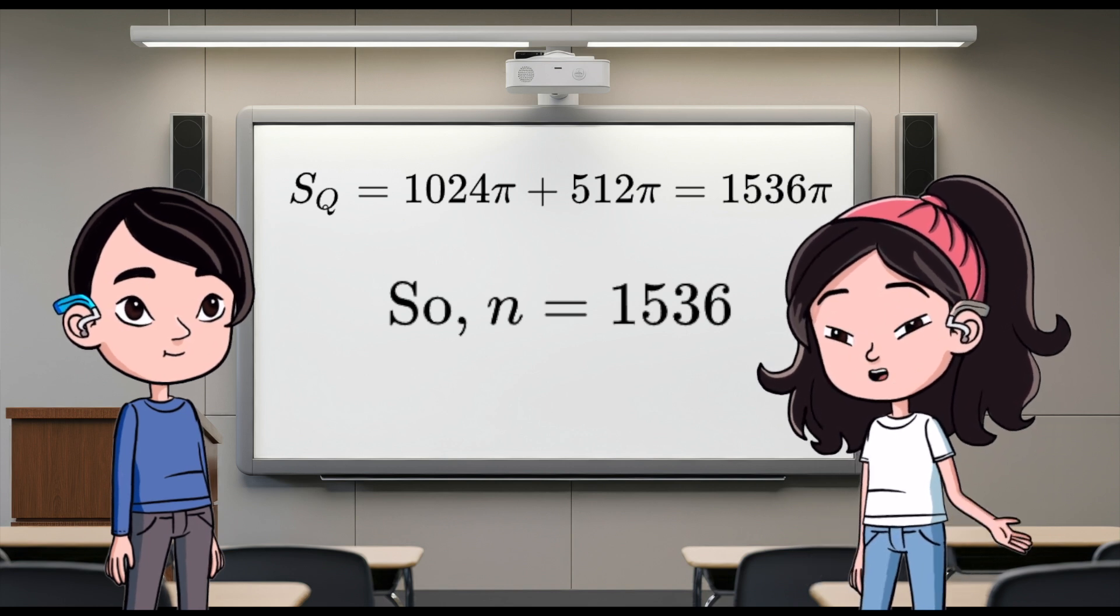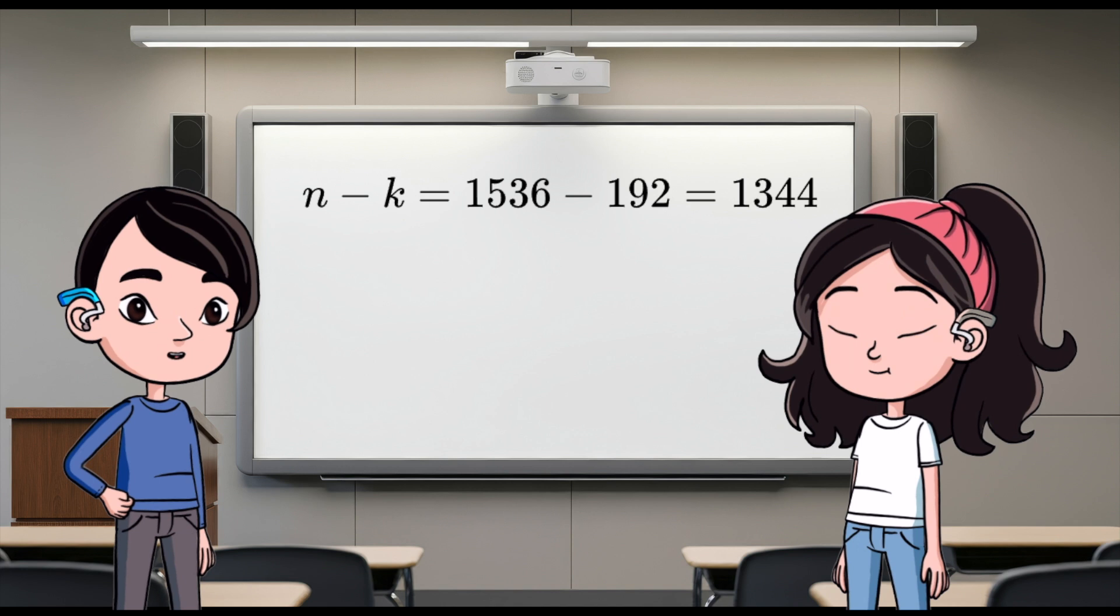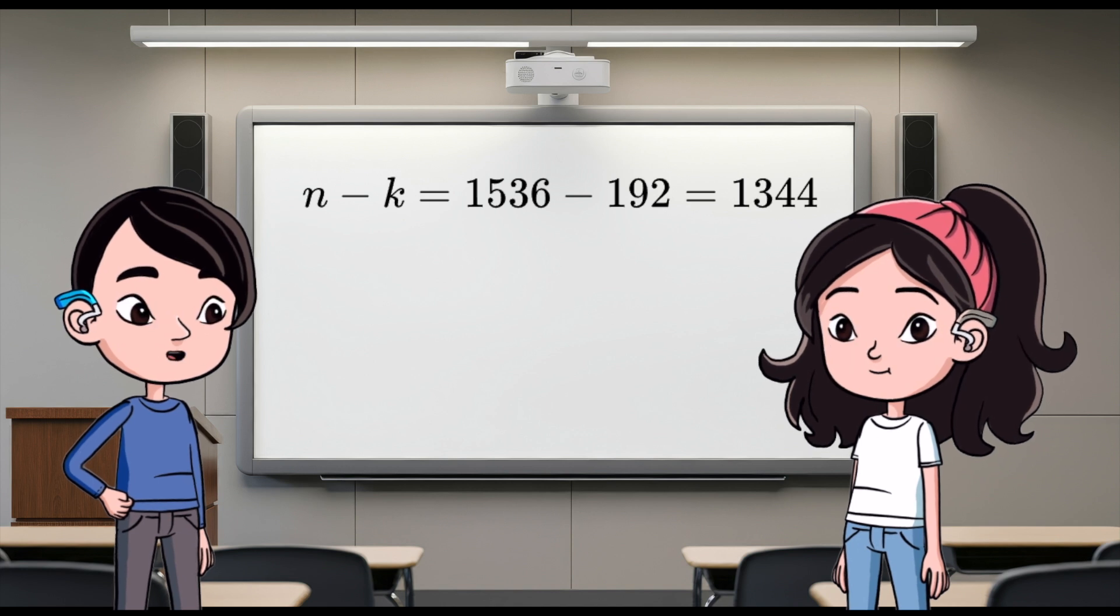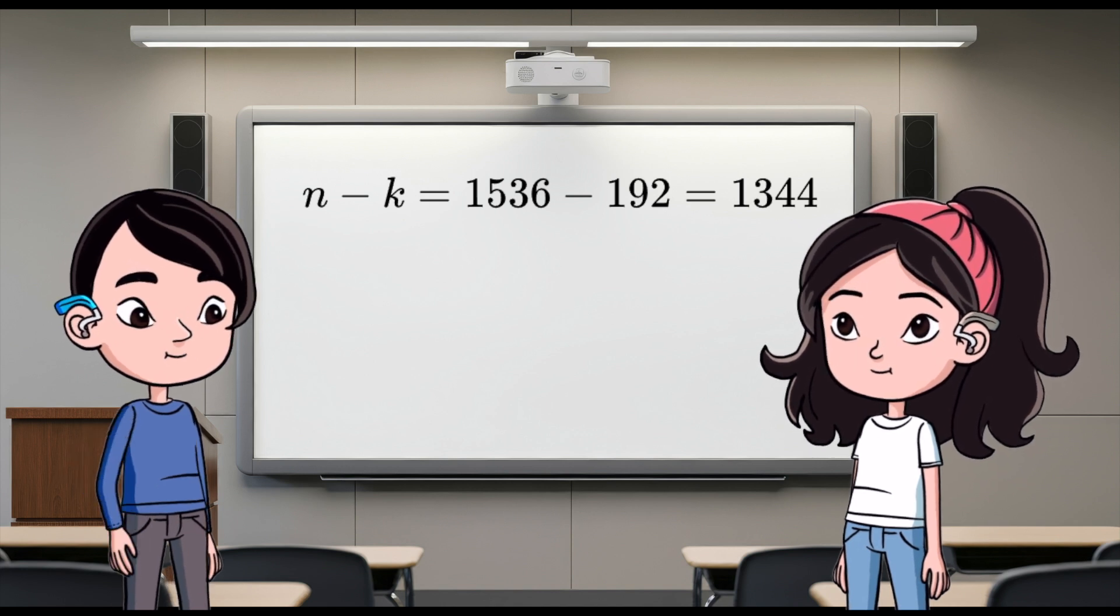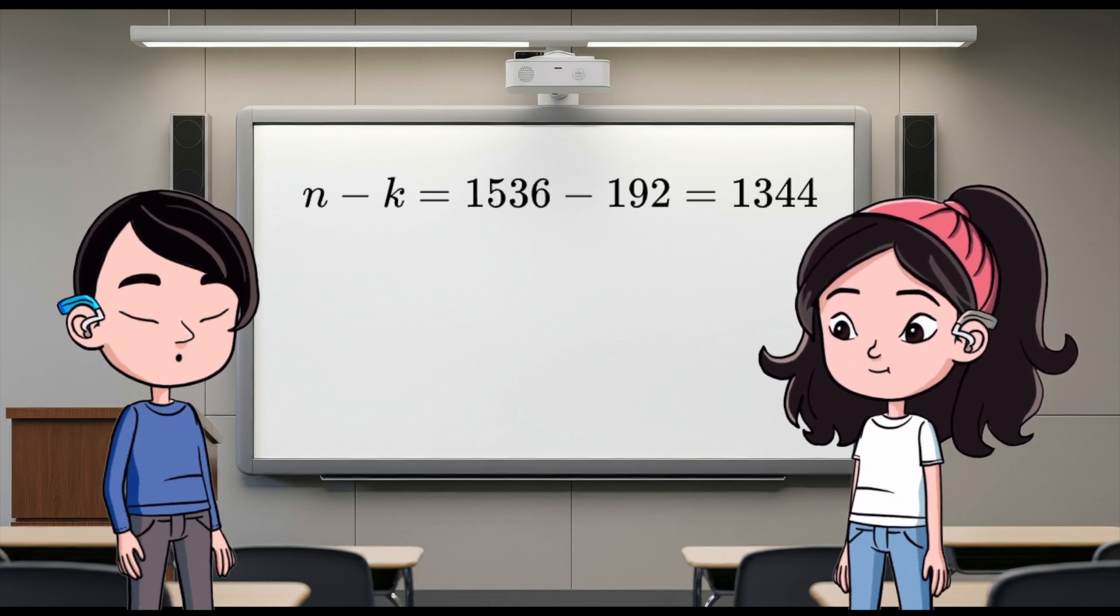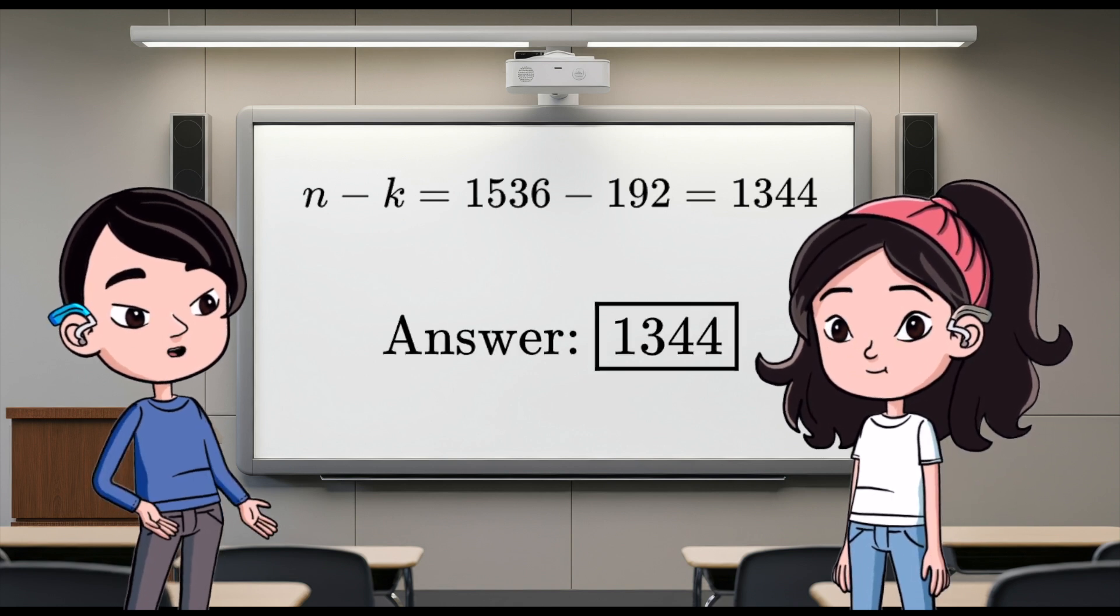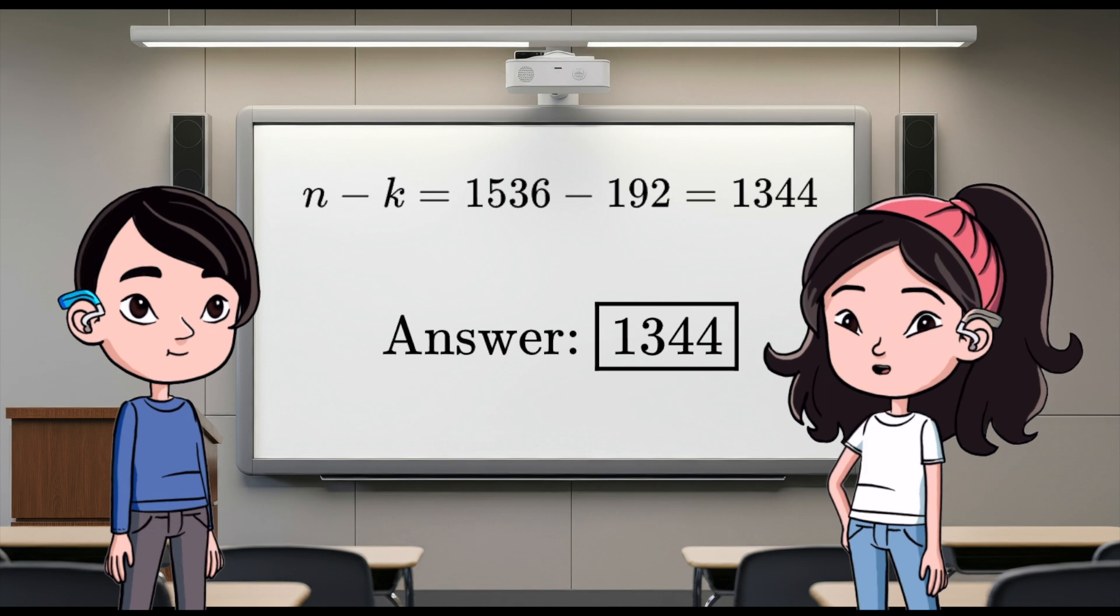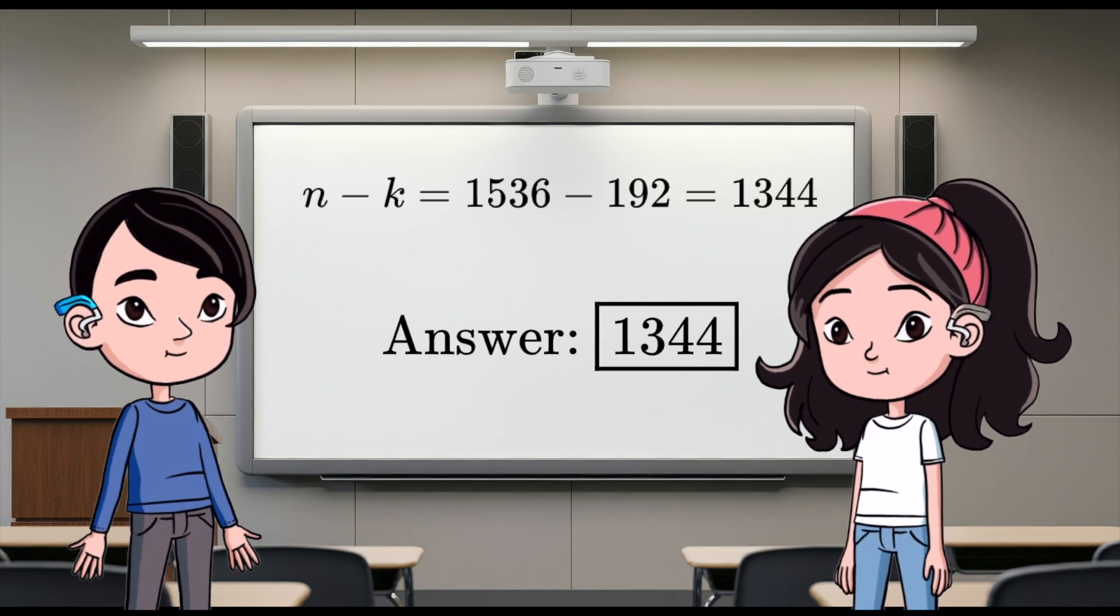Now, let's find n minus k. n minus k equals 1536 minus 192. Calculating that gives us 1344. Boom! The answer is 1344. Which corresponds to option A. Let's go! We nailed it.